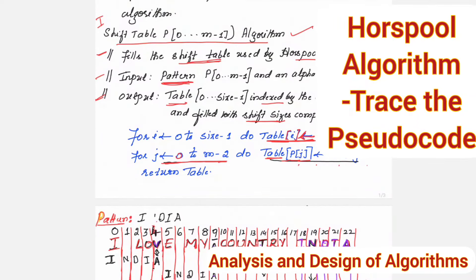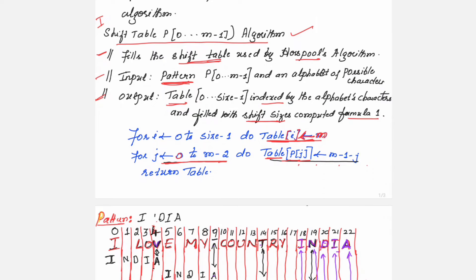Hello viewers, welcome to this video lecture series on analysis and design of algorithms. This session is in continuation with the previous one. The previous session covered the Horspool algorithm — how to construct the shift table and how to search the pattern in a given text. The algorithm for the shift table was explained in detail; now the algorithm for Horspool matching will be explained in this session.